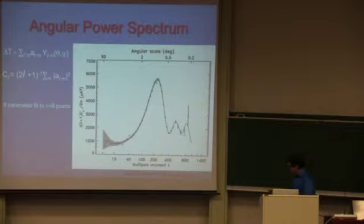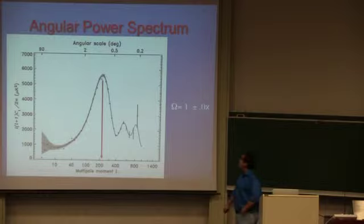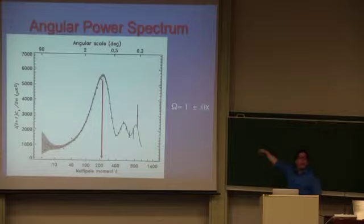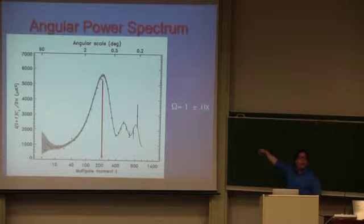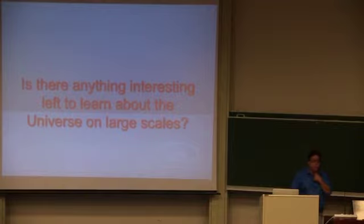The first thing we learned is that the location of the first peak puts omega very close to 1 — the universe is very close to flat. We learned many other things. We know those six parameters to a percent or a few percent or a fraction of a percent, depending on which map and which combination of data. But once we've learned that, the question is: is there anything interesting left to learn about the universe on large scales?